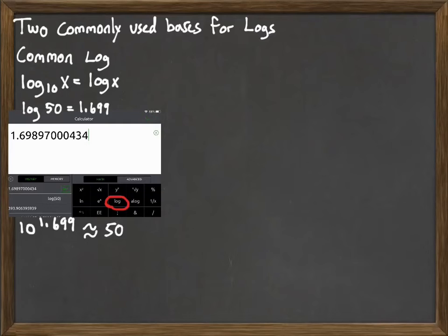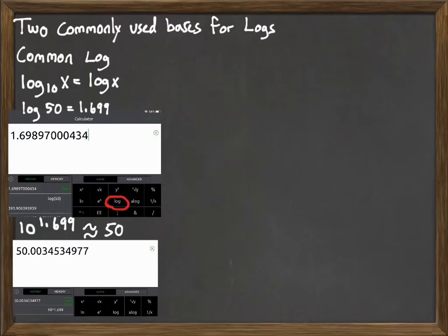The base for common log is 10. If we raise 10 to that power, we should get 50, and that's what we do. It's not exactly 50 because we rounded it off, but you can see it's close.